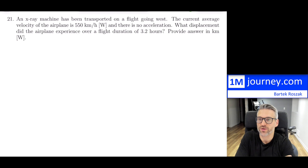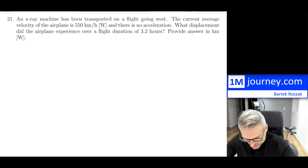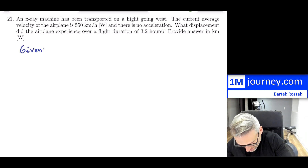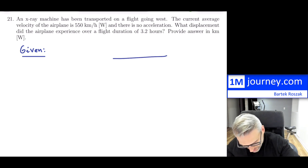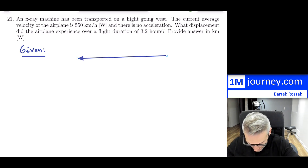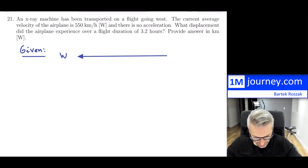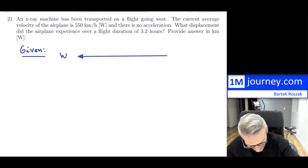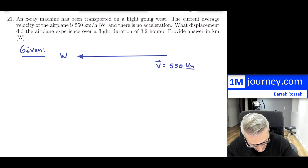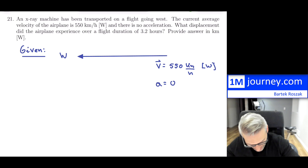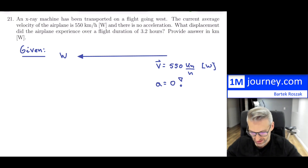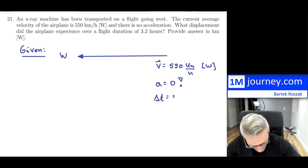Here's the second example. An x-ray machine has been transported on a flight going west. The current average velocity of the airplane is 550 kilometers per hour west, and there is no acceleration — acceleration is basically equal to zero. What displacement did the airplane experience over a flight duration of 3.2 hours? The total time is 3.2 hours. Provide the answer in kilometers.